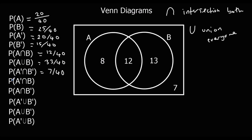Now the probability of not A and B — the intersection. Not A is those two sections and B is those two sections. Again, it's got to be both of them, so this one is 13. The intersection of them is 13 out of 40.